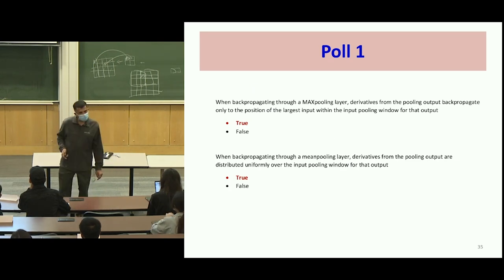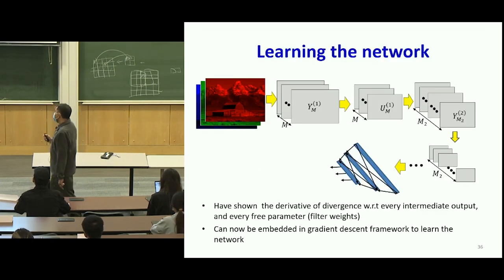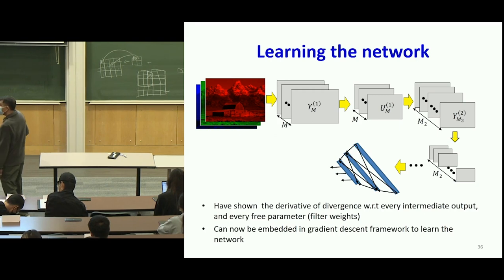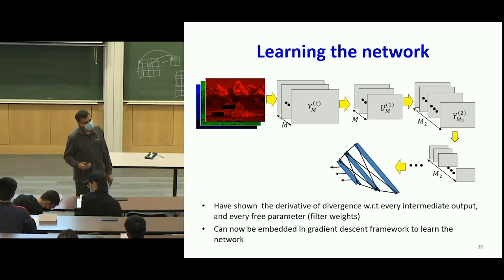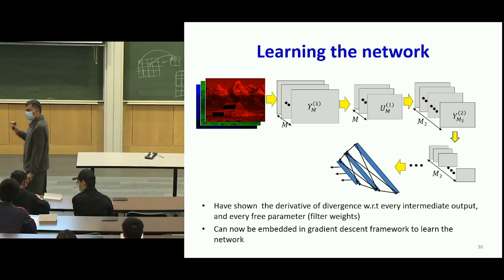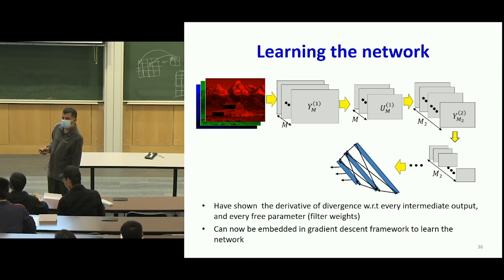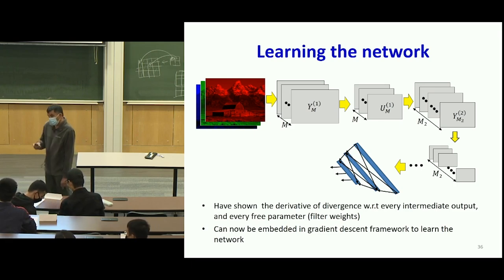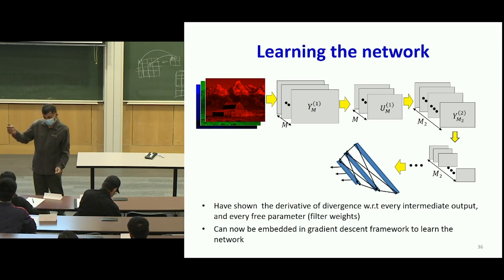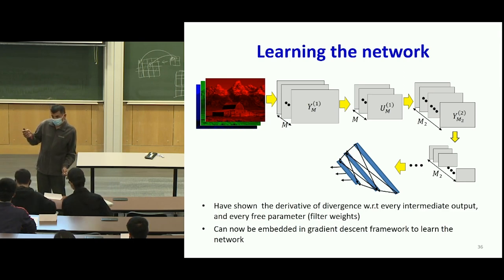We've now shown the derivative of the divergence with respect to every intermediate output and every parameter. Once you've computed these derivatives, you can plug them into gradient descent. A student asked about perturbations and the derivative at the max pooling location.